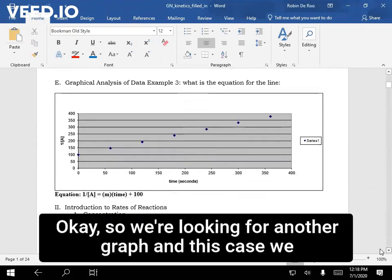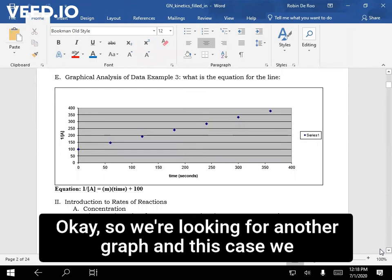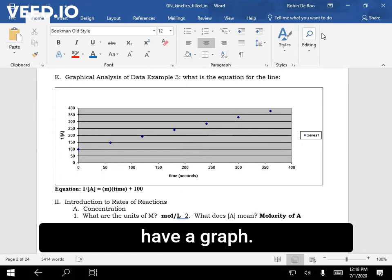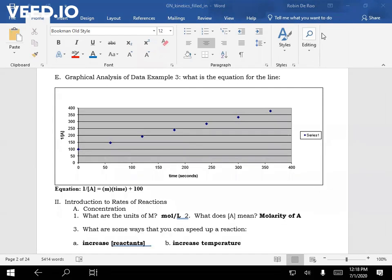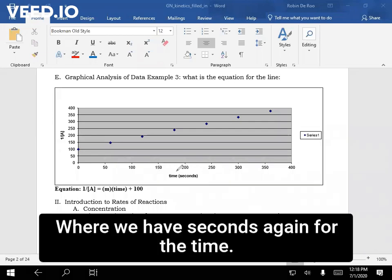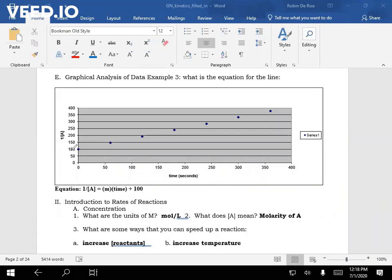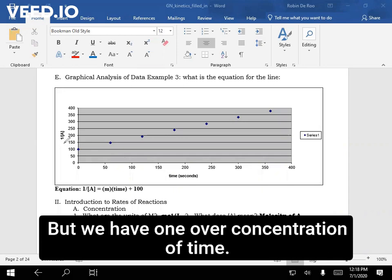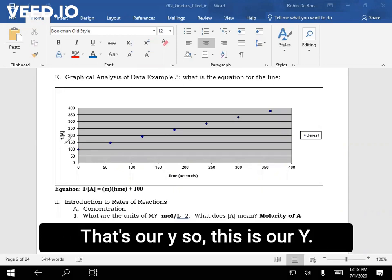Okay, so we're looking for another graph. In this case, we have a graph where we have seconds again for the time. But we have 1 over concentration of time, that's our y. So this is our y.